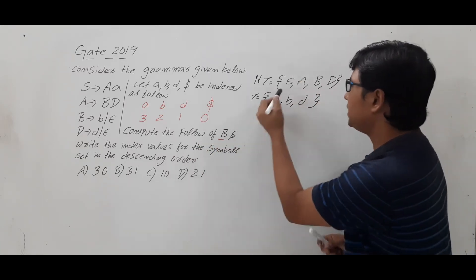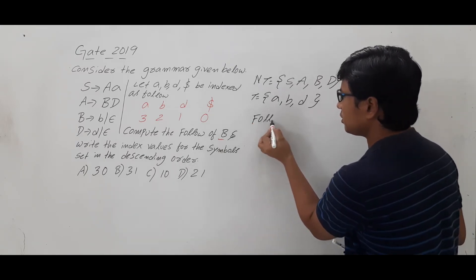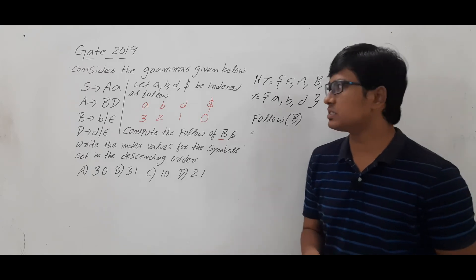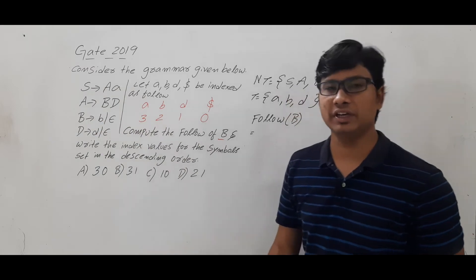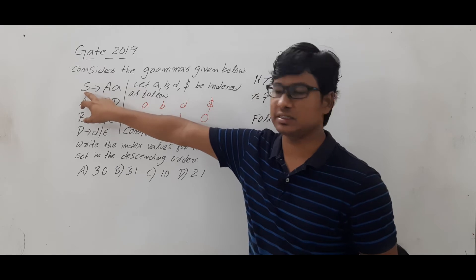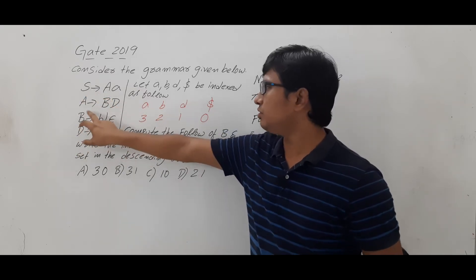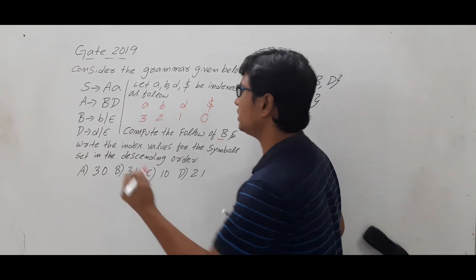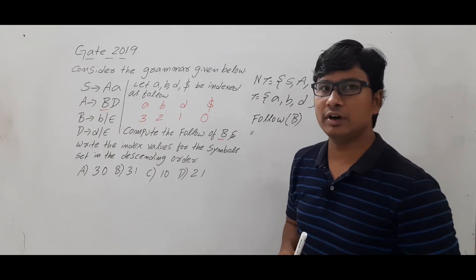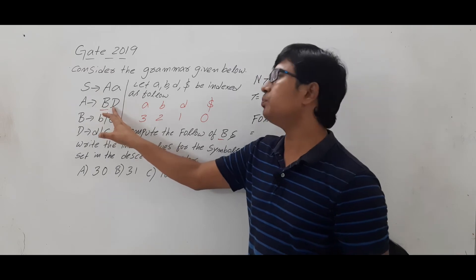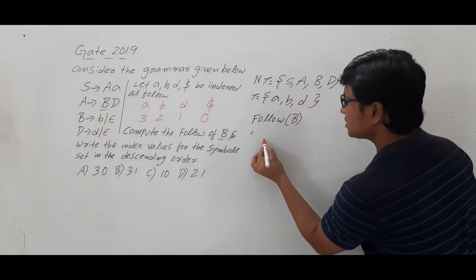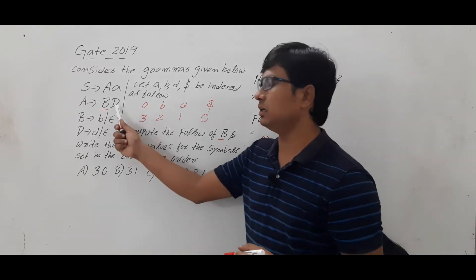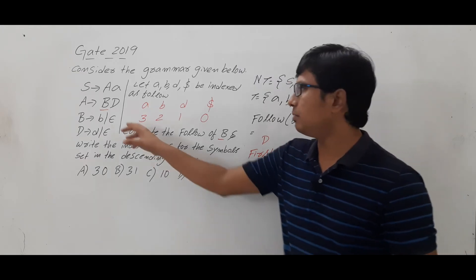Now let me compute Follow(B), where B is a non-terminal. First, check whether B is the start symbol — the start symbol is S, so B is not the start symbol. Next, identify where B appears in the right-hand side of productions. B appears in A → BD. Whatever comes after B, compute its First. After B is D, a non-terminal, so compute First(D).